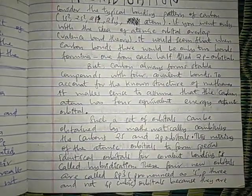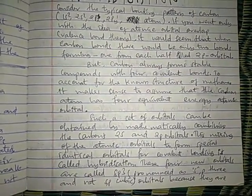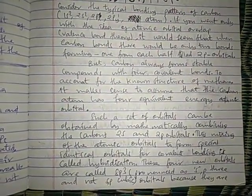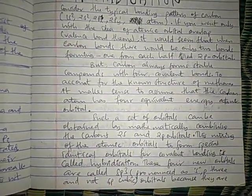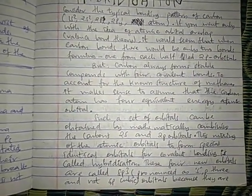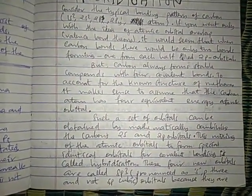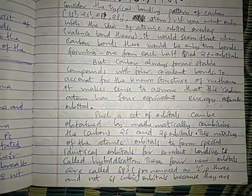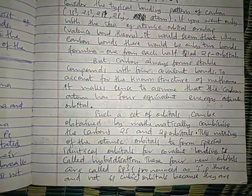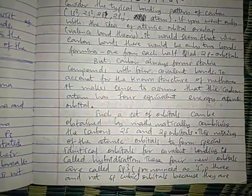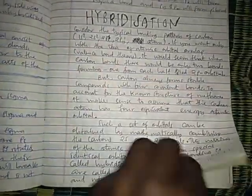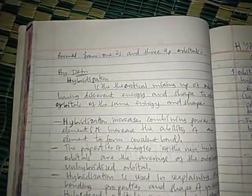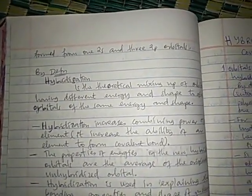Such a set of orbitals can be obtained by mathematically combining carbon's 2s and 2p orbitals. This mixing of atomic orbitals to form special identical orbitals for covalent bonding is called hybridization, and these four new orbitals are called sp3 orbitals. It is pronounced sp3, not sp cubic. Although written with a superscript 3, it is not pronounced as cubic. These orbitals are formed from one 2s and three 2p orbitals.